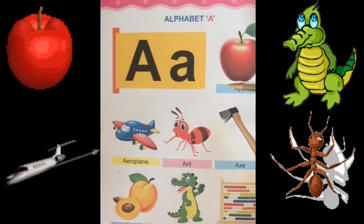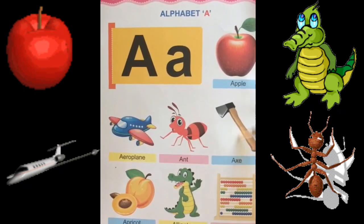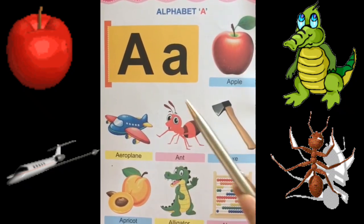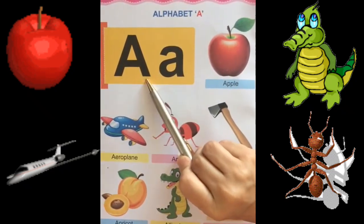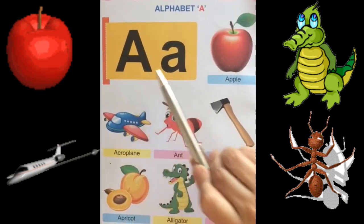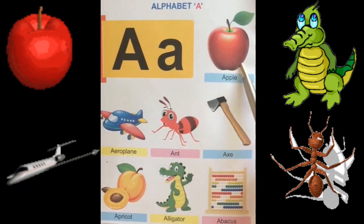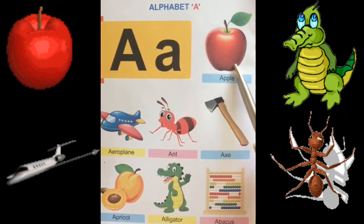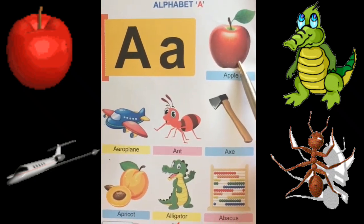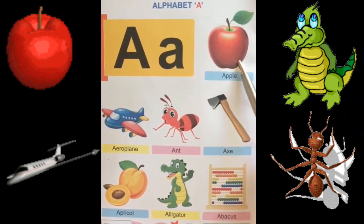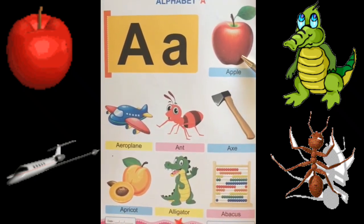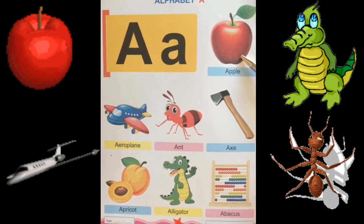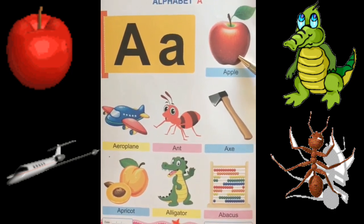There are different pictures of A. Apple. Apple is a fruit. This is in red color. This is very good for us.